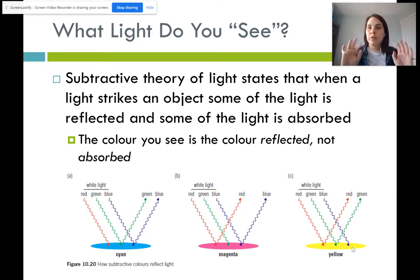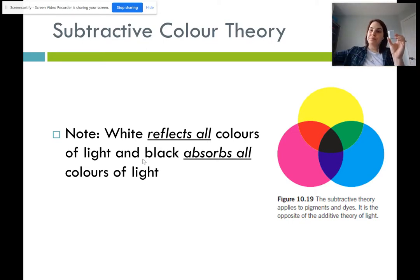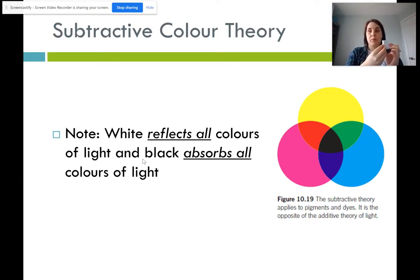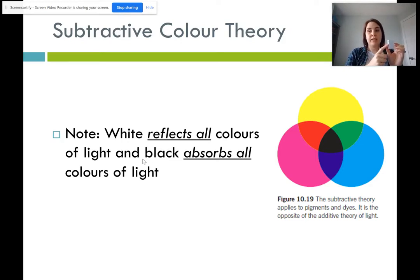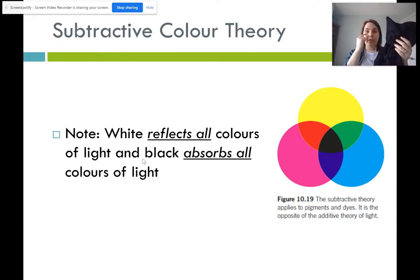If you perceive something as white it means all of the colors are being reflected. White light comes in — red, green, and blue — hits the object, none of it is absorbed, it all bounces off into your eye, and your eye sees the mixture as white. If something is black, like a dark sweater, light comes in from the window — red, green, blue — all hitting the object, and the object absorbs all of the colors. There's an absence of light going into your eye, so you perceive it as black.